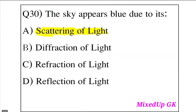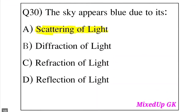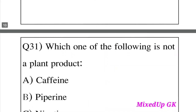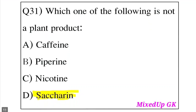Question 30: The sky appears blue due to which phenomenon? Option A: Scattering of light. Option B: Diffraction of light. Option C: Refraction of light. Option D: Reflection of light. The answer is Option A, Scattering of light. Blue light is scattered, which is why the sky appears blue.